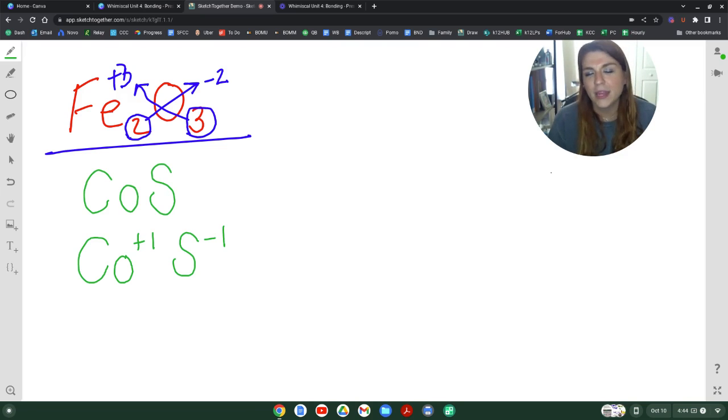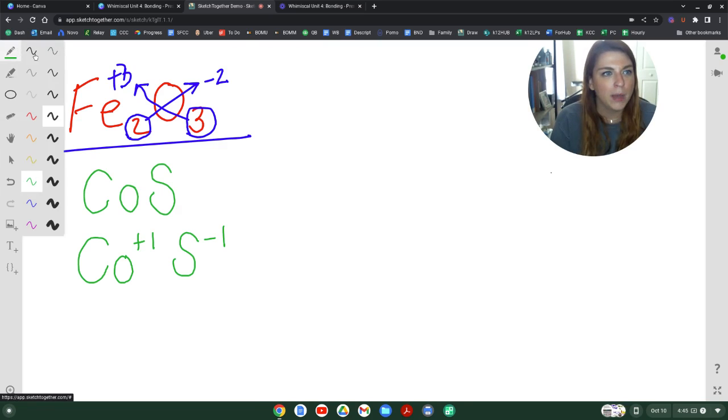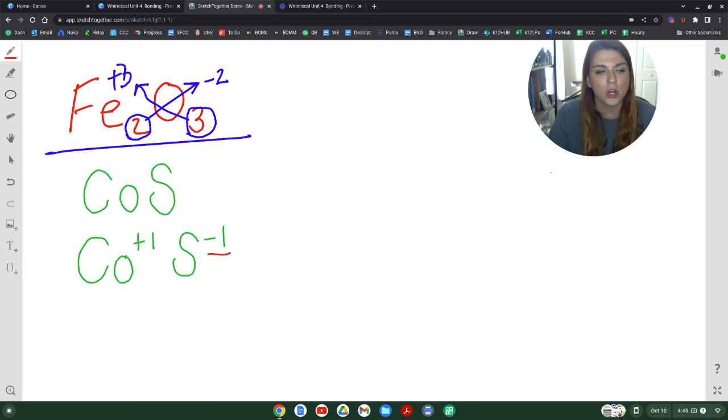Sulfur is a member of group 16, and that means it has six valence electrons. If sulfur had gained just one valence electron, then it would have seven in total. And that is not going to satisfy its valence. It has to have eight in total. So, sulfur with a minus one charge is not possible, meaning that the subscripts had to have been reduced on the crisscross.